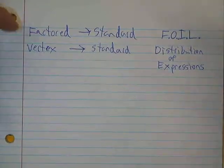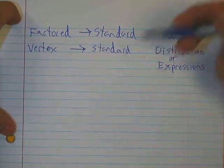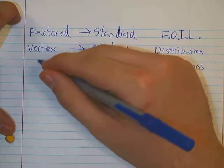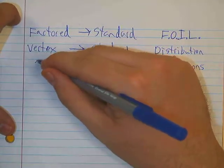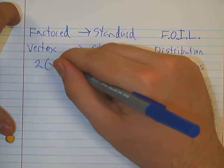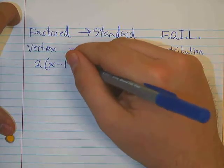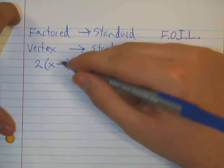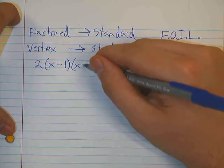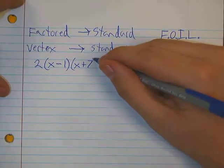So let's see what in the world I'm talking about. Let's say I have a factored form, for example, 2 times x minus 1 times x plus 7.